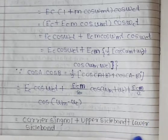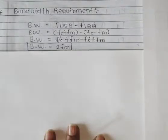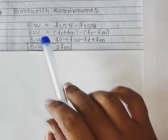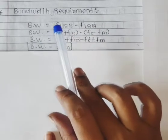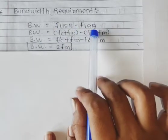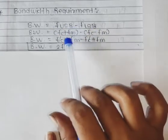Then we will see the topic of bandwidth requirements. See, this is the bandwidth requirements. The bandwidth is upper sideband frequency minus lower sideband frequency. You already know what the formula is.